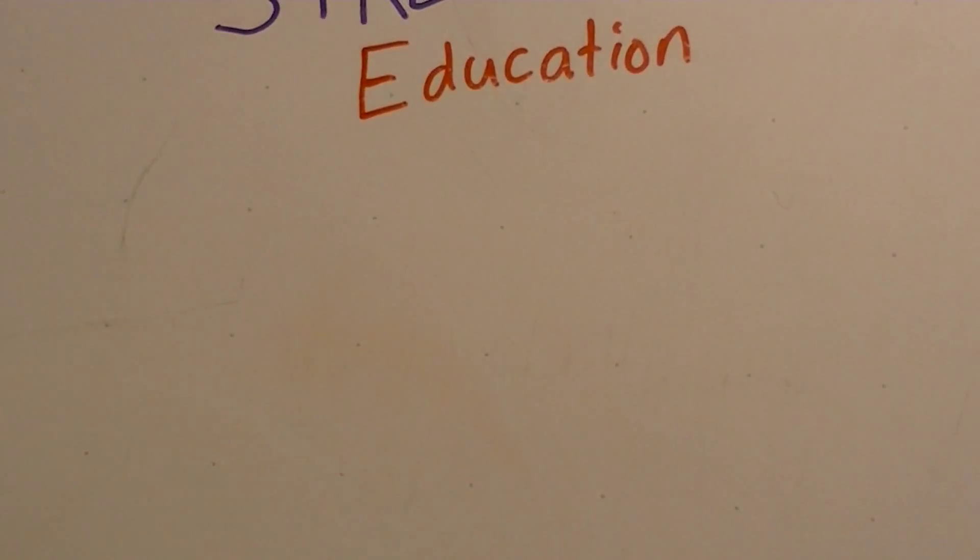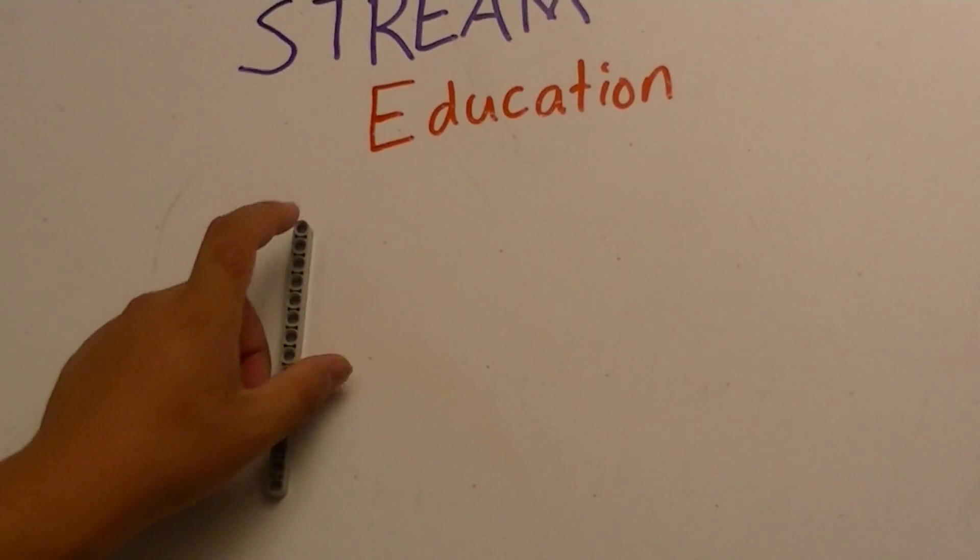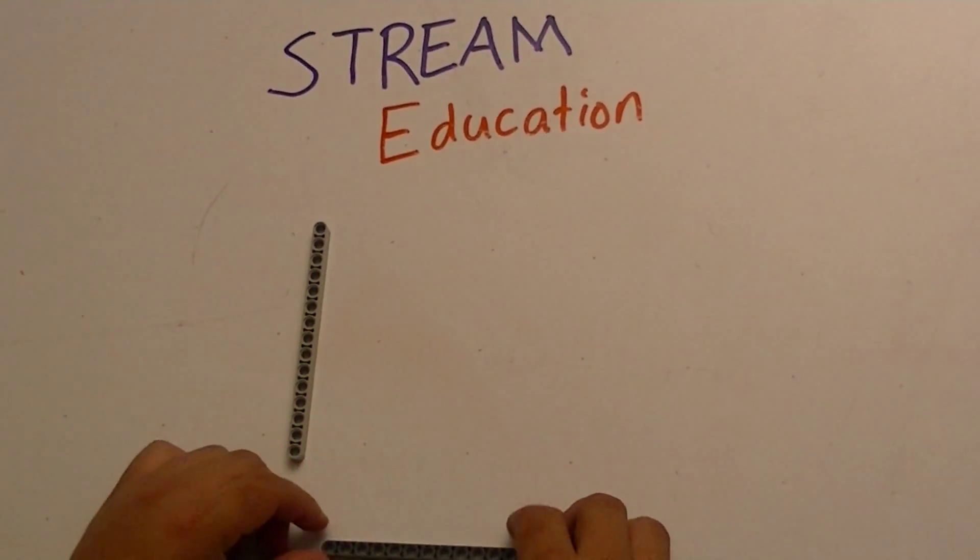L pieces, in general, can be used for attaching two pieces together, two beams together, at an angle.